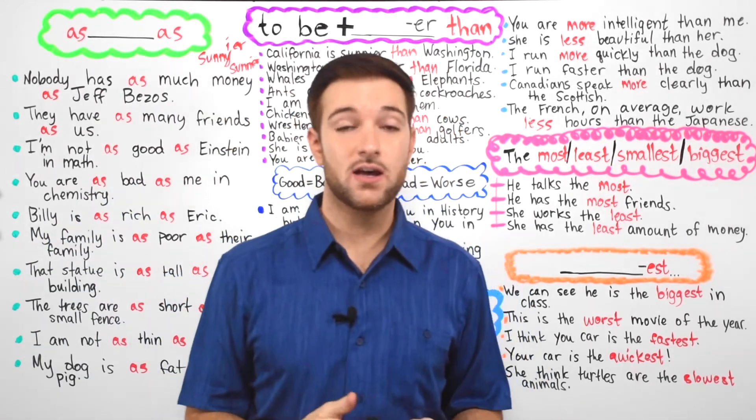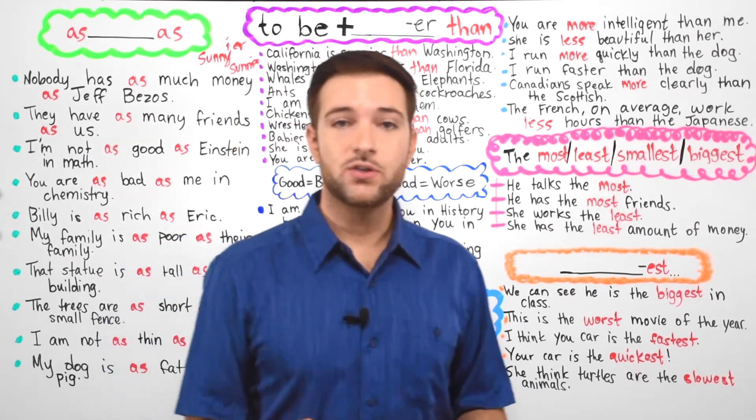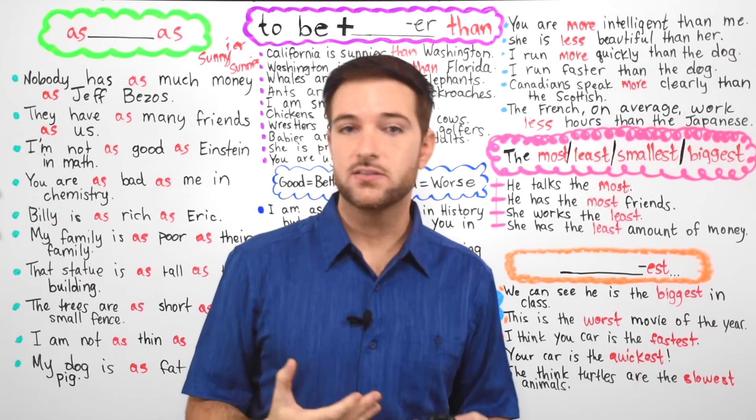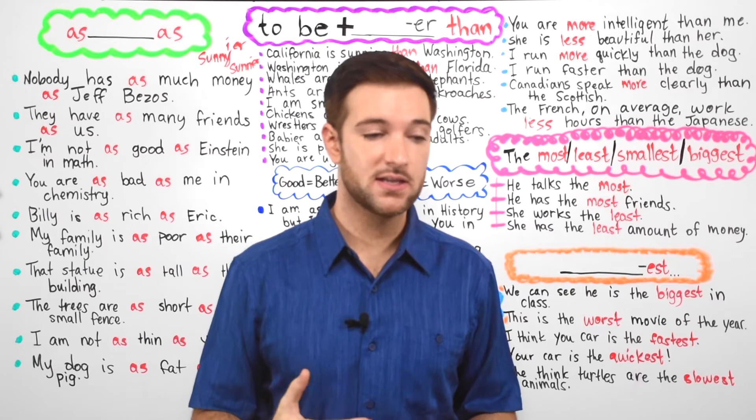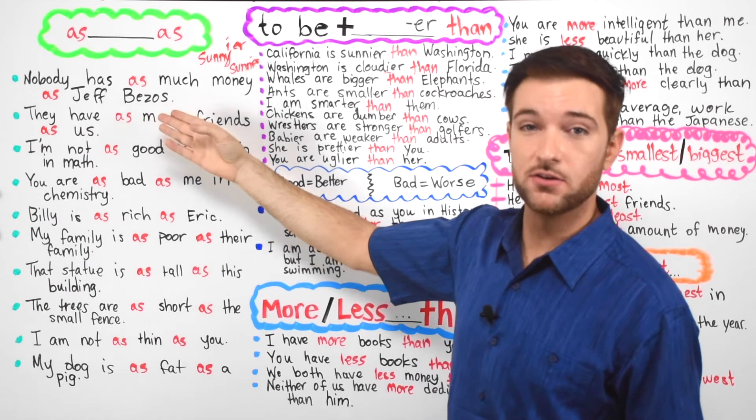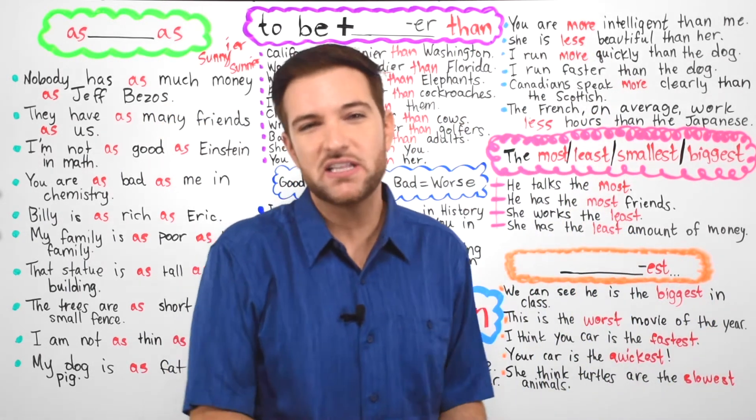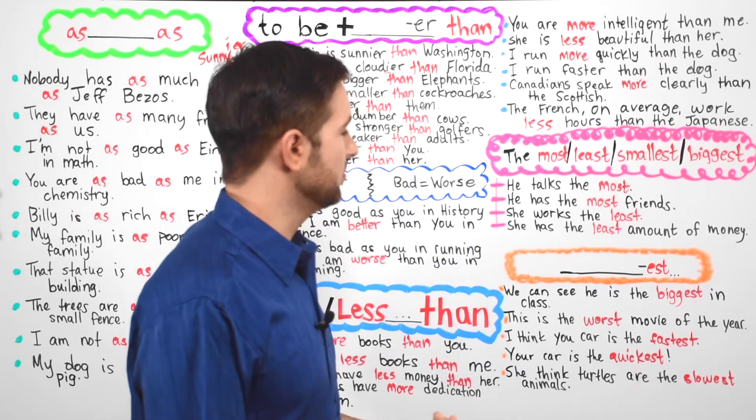All right, so we're going to move on and let's go to the next ones. Now, when you want to compare more than two things, you have to use the words the most, the least, the smallest, the biggest, the tallest. The most means like you have the most amount, like the most. Jeff Bezos has the most money. You understand? And then we have the least. Meaning you have very little of something in comparison to others.